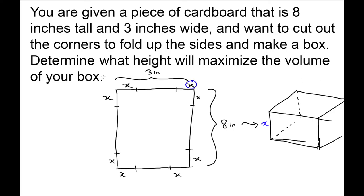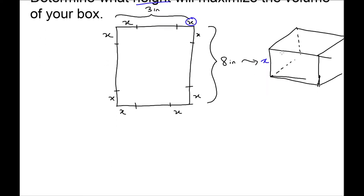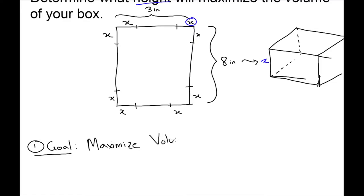So the problem is to determine what value of x — what cut we need to make — will maximize the volume of our box. Let's go right into it and start applying our steps. The first thing we want to do is write our goal. We want to start with our goal, because that helps us stay grounded in reality and remember what we're finding. Our goal here is to maximize volume.